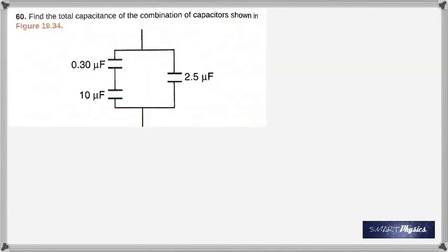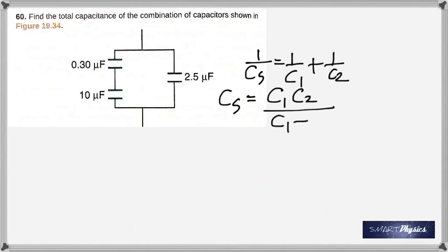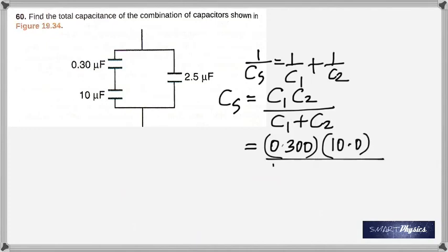Now the problem here is talking about a combination of capacitors. You have to find the total capacitance. These two are in series with each other, and that combination is in parallel with this. First let's find out the total of these two using 1 over Cs is 1 over C1 plus 1 over C2. This is a shortcut - if you only have two capacitors, it's always product divided by the sum. In this case it comes out to be 0.3. I'm keeping all of them in microfarads, so you get 0.291 microfarad.